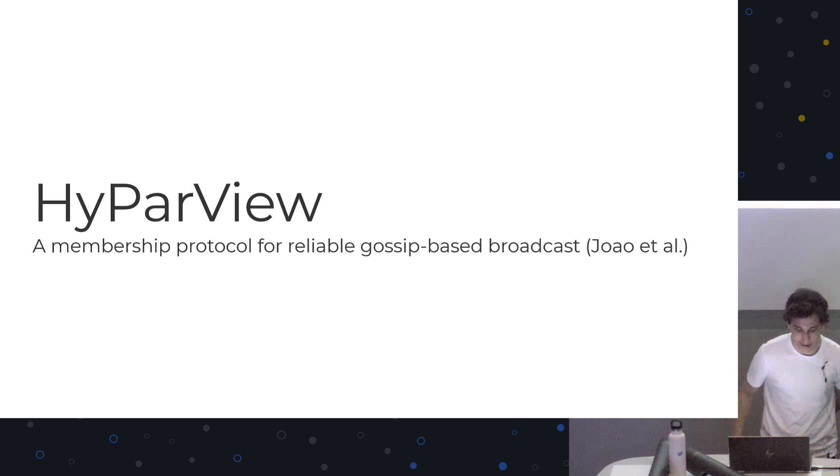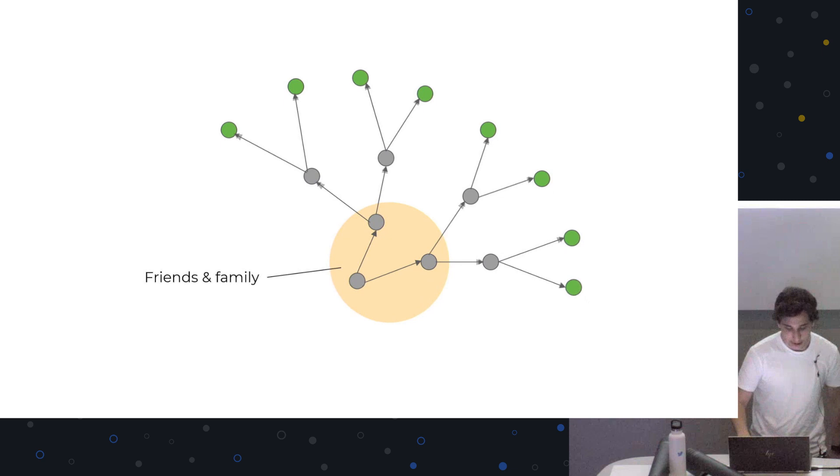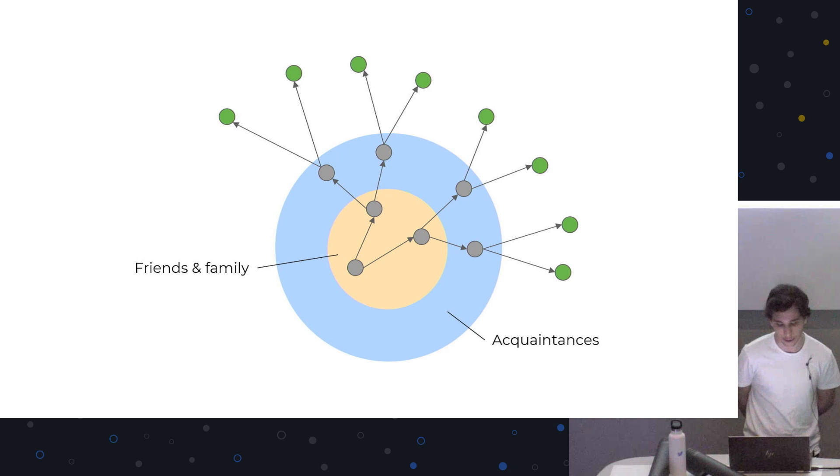So there's a paper called HyParView. And this is called the membership protocol. So it's just a way of handling the contacts that we're going to speak with and spread the gossip. And this stands for a hybrid partial view. We'll see why not. So this is again inspired by human nature a little bit. So what they do in this protocol is they keep two views. And it's very similar to what we do as humans. You probably have your close friends and family around you. And those would probably be the first people you speak with. But then you also have acquaintances. So people you roughly know that you might speak with eventually, but you won't necessarily speak with them directly.